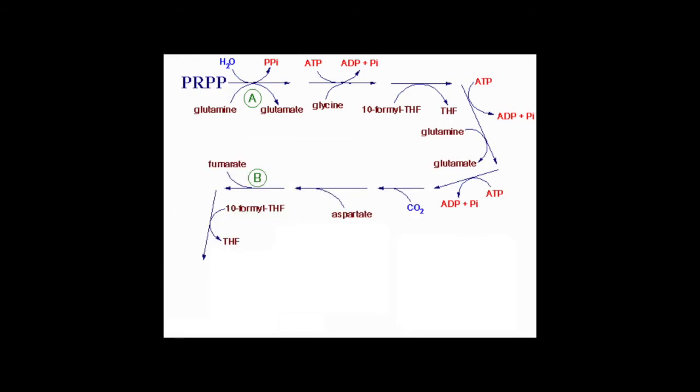Now let's look at the two drugs that inhibit this pathway. 6-MP or mercaptopurine and its prodrug azathiopurine inhibit PRPP's conversion into IMP.